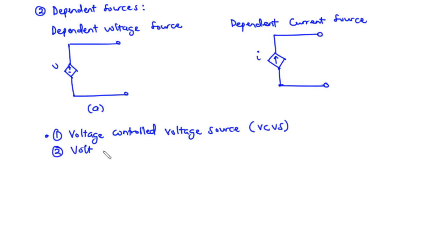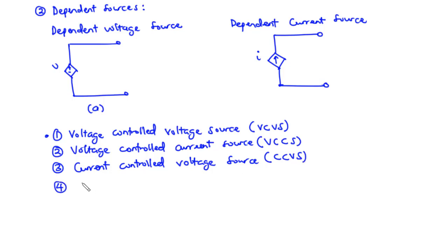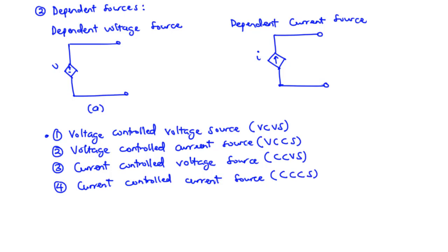Third, we can have a current-controlled voltage source, and that is CCVS. And then lastly, we can have a current-controlled current source, and that is CCCS. So these are the four different configurations we can have as a result of dependent sources being controlled by another voltage or current source.